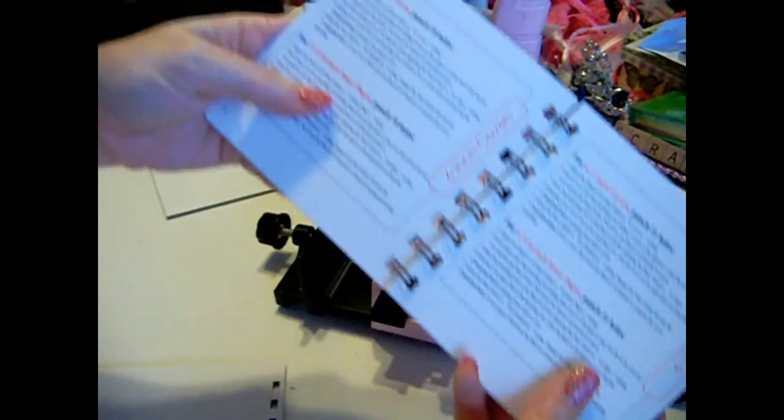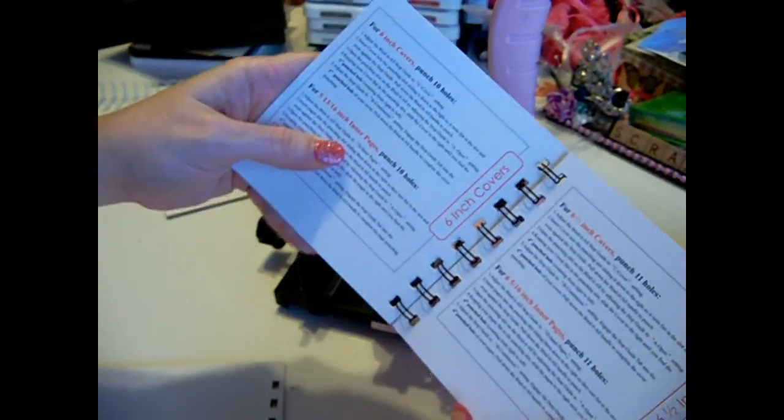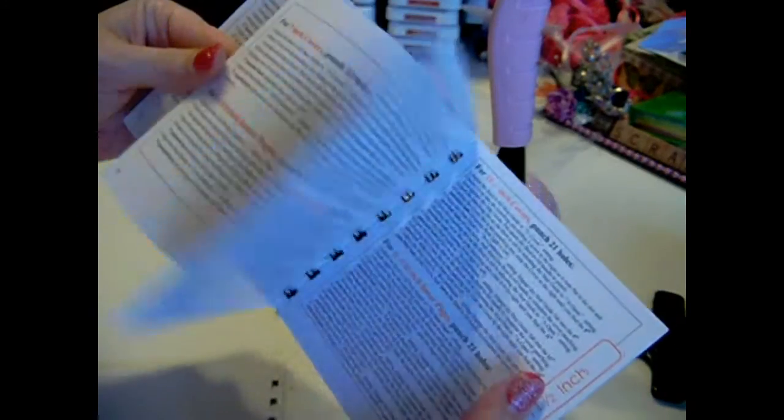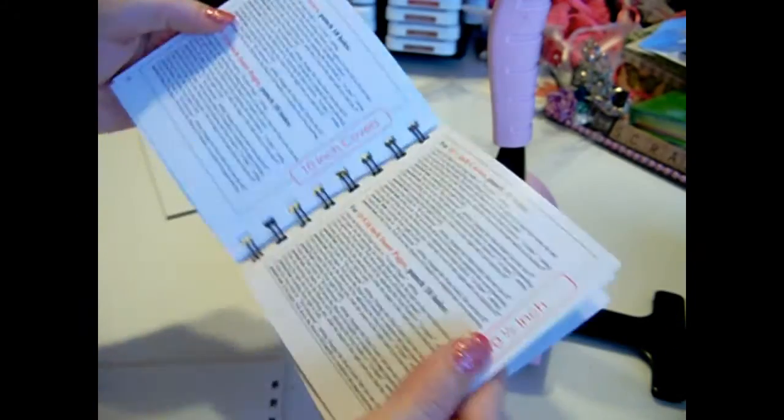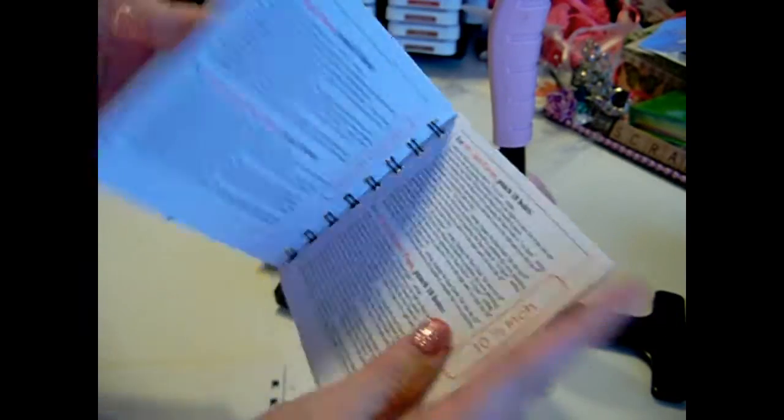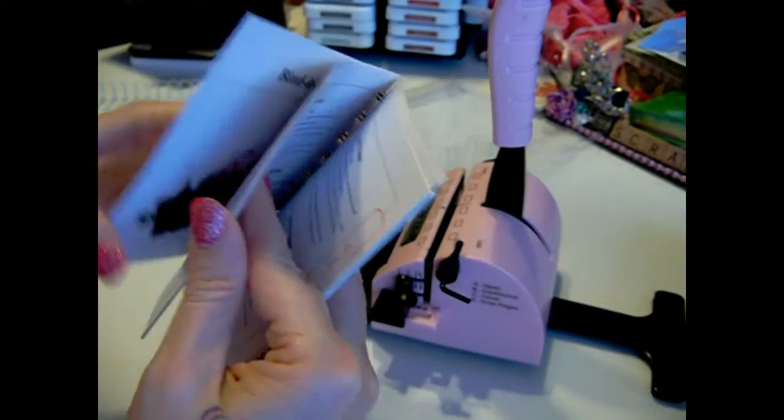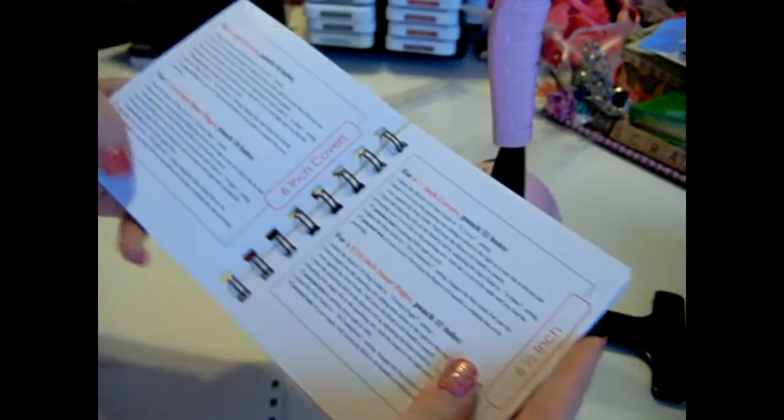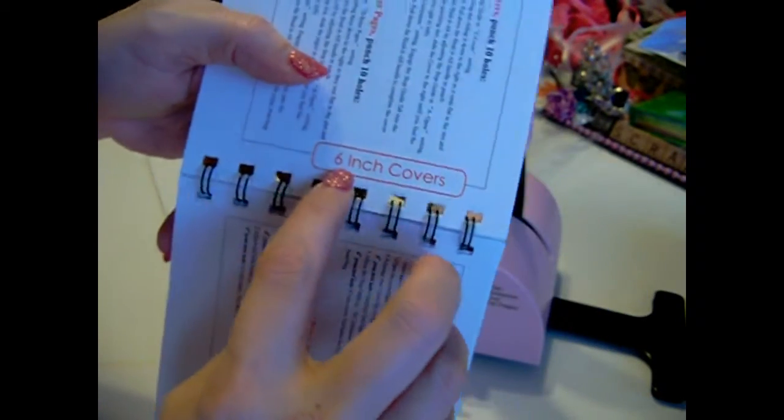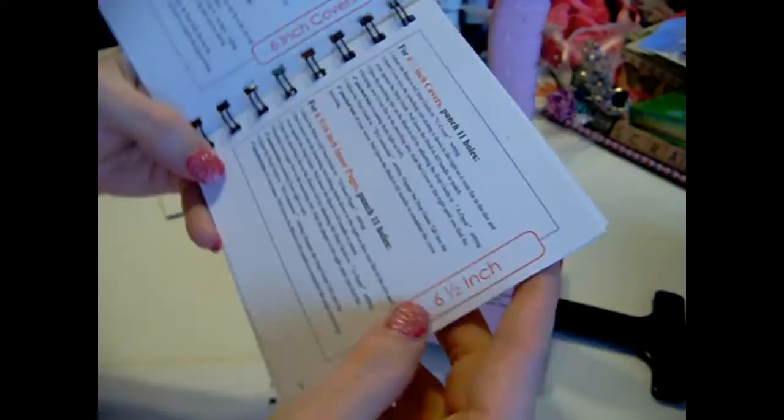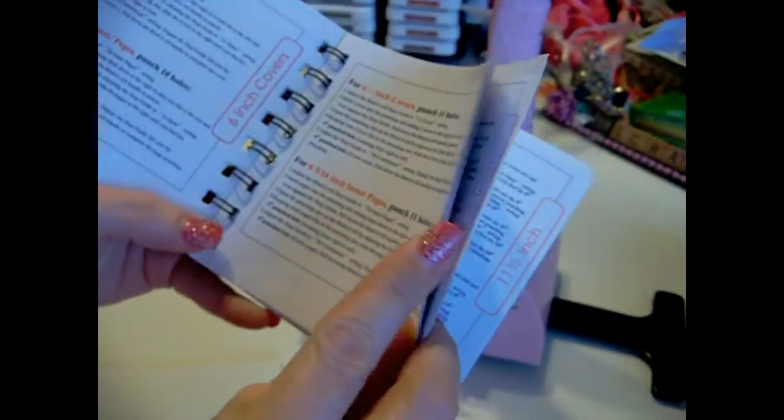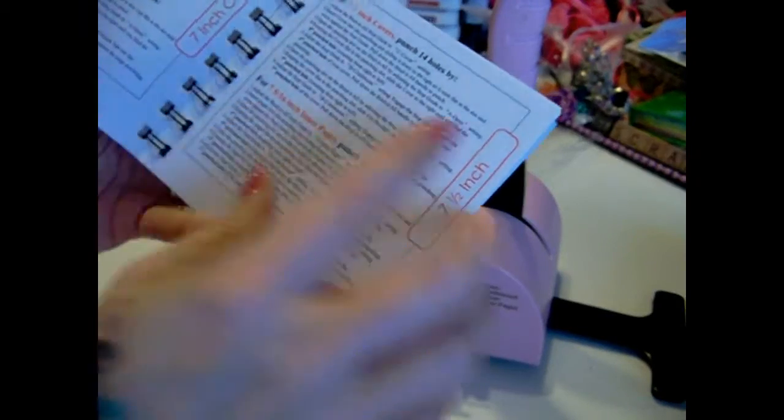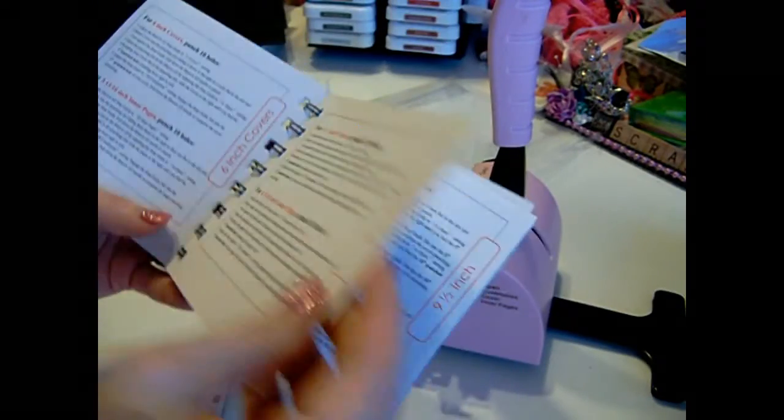So I basically have a guide that came with my Zutter. If anyone would like a copy of the pages in this book, I would be more than welcome to take copies of it and send it to you. It goes down to detail of like six inches, six and a half, and it tells you how many holes for each thing. And I will get it out to you.